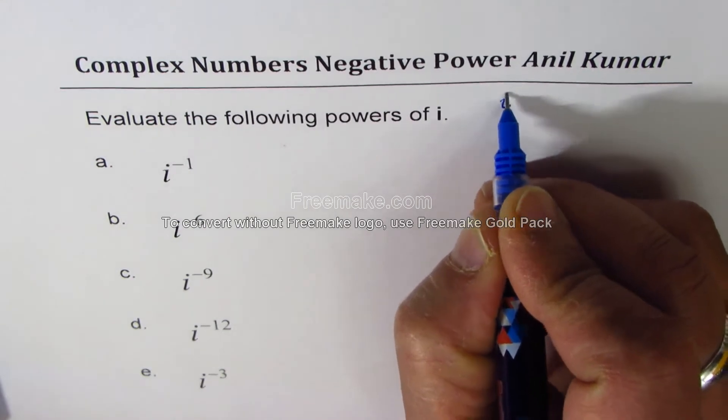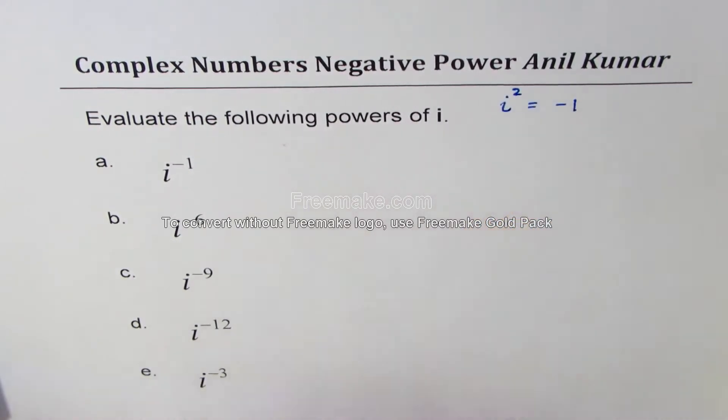As you know, iota square or i square is negative 1, correct? So let's begin from the very first example. You can always pause the video, answer, and then check with my solution.